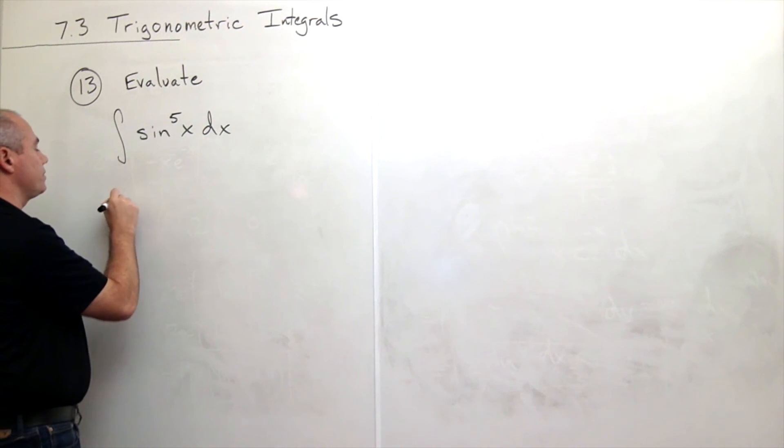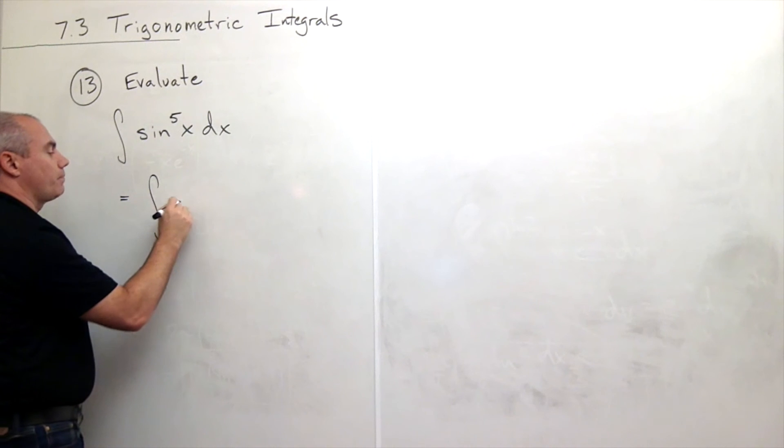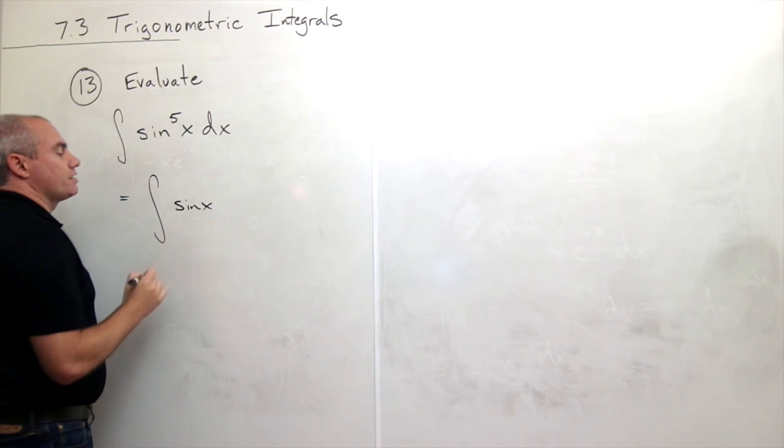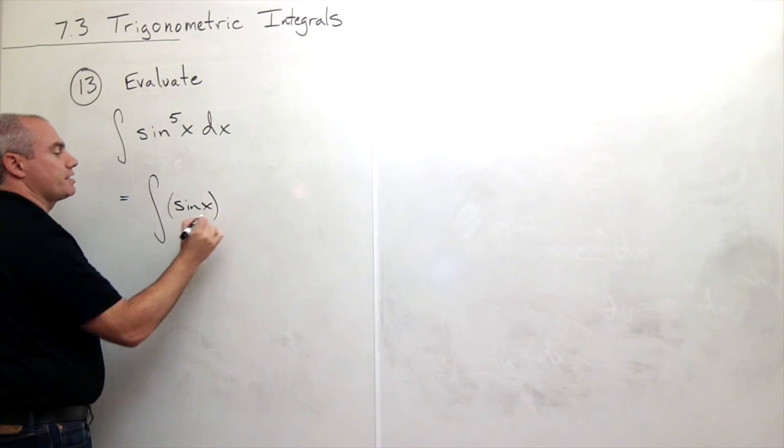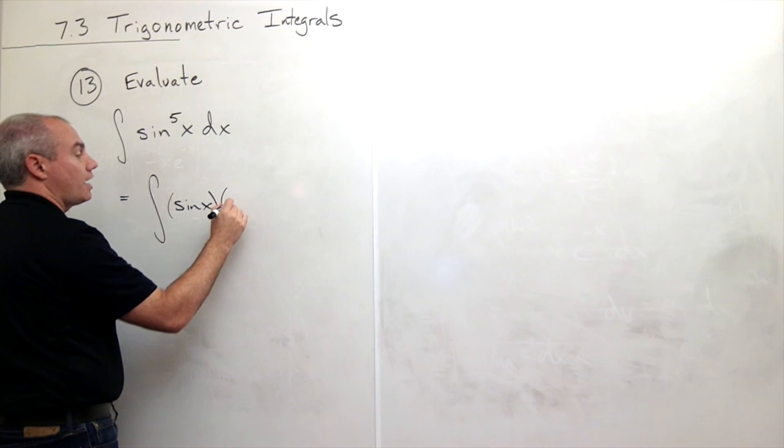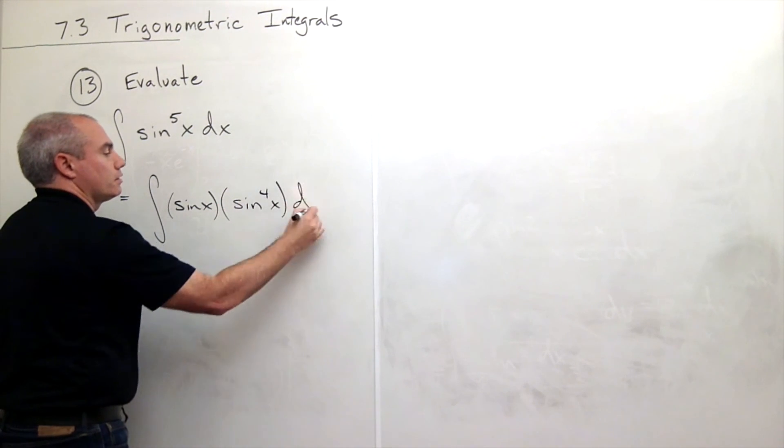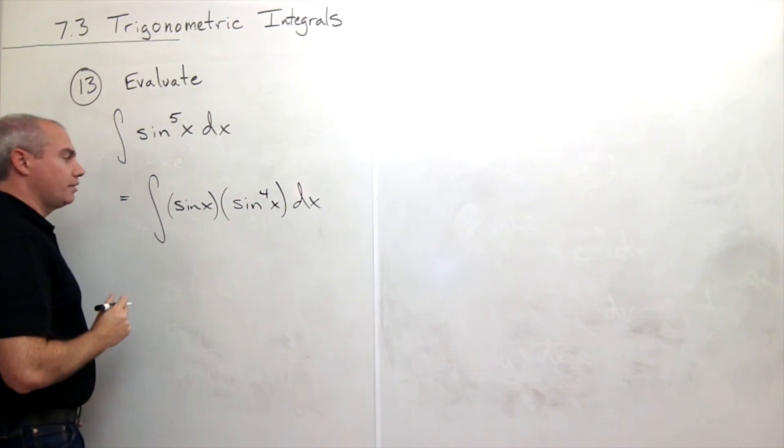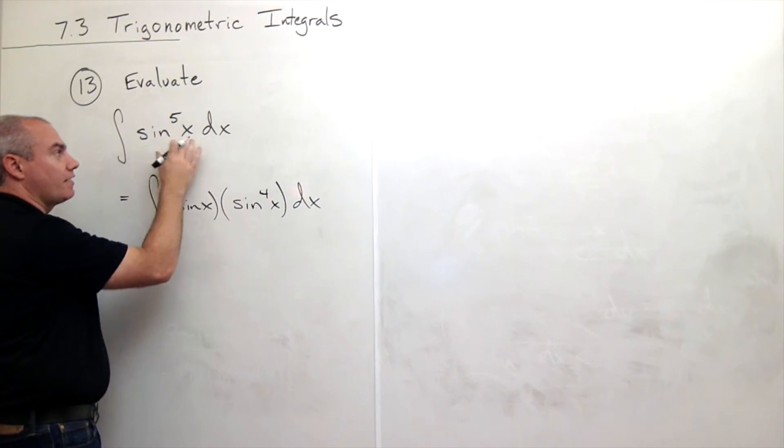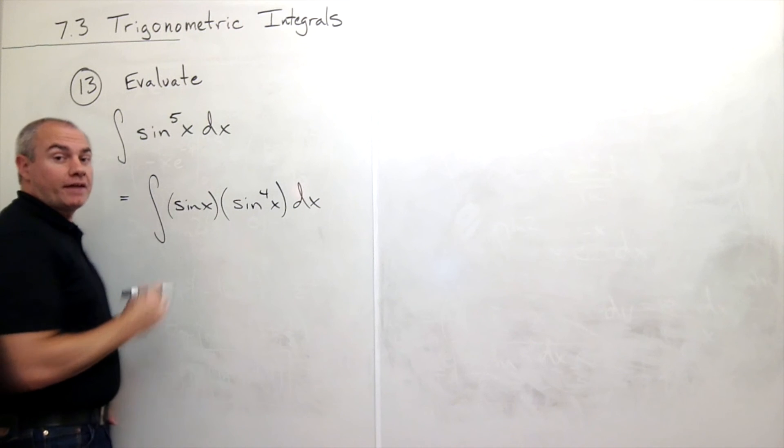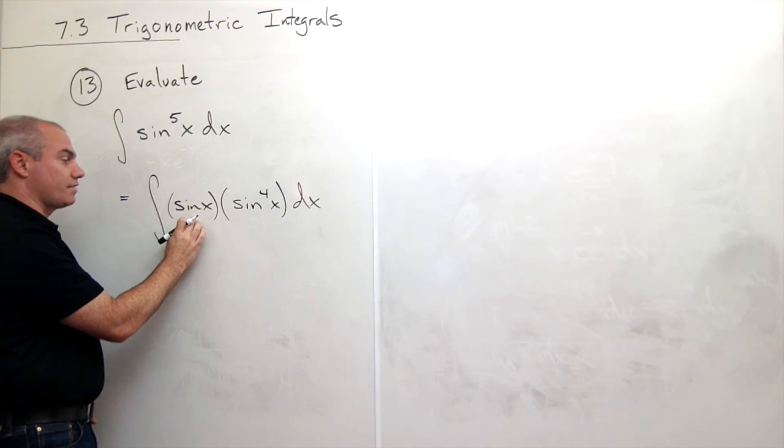What I'm going to do is rewrite this, and I'm going to break one of those sines off to the side. So I'm going to write this as sine of x times sine of x to the fourth. So this is still sine of x raised to the fifth power. I've just written one of the sine x's out to the side.